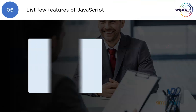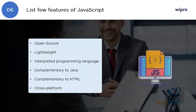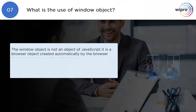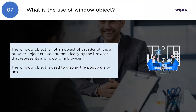List a few features of JavaScript. JavaScript is an open-source, lightweight, interpreted programming language. It is complementary to Java, complementary to HTML, and cross-platform.